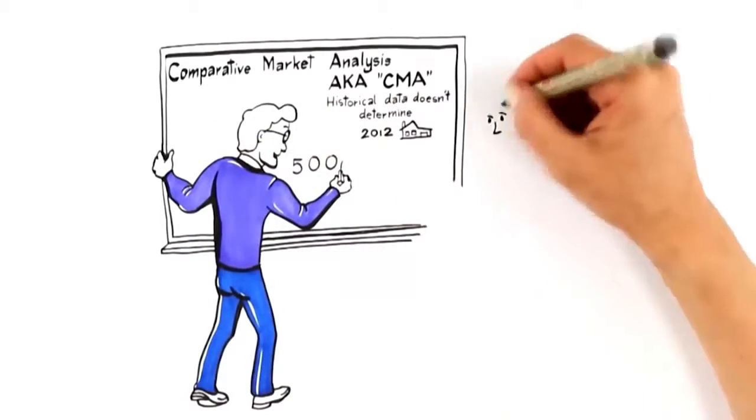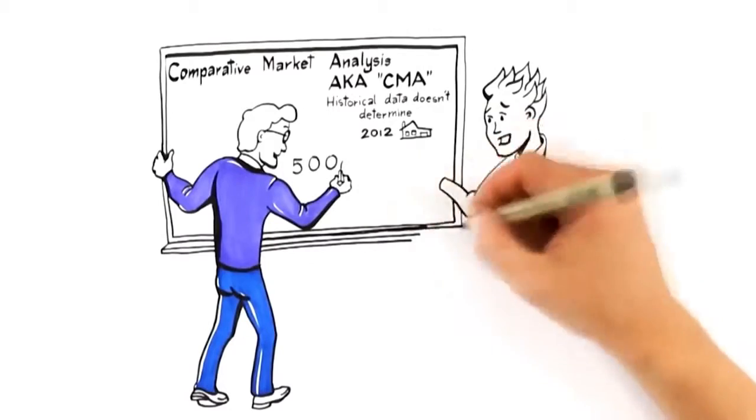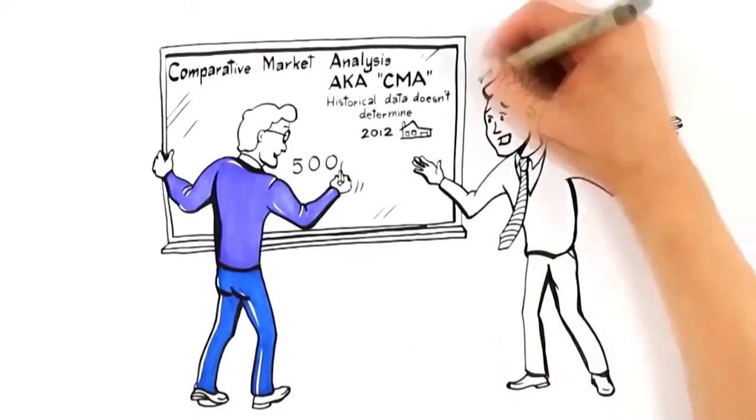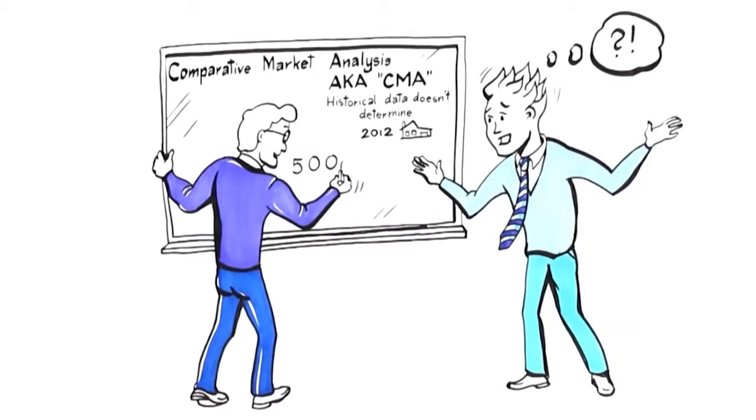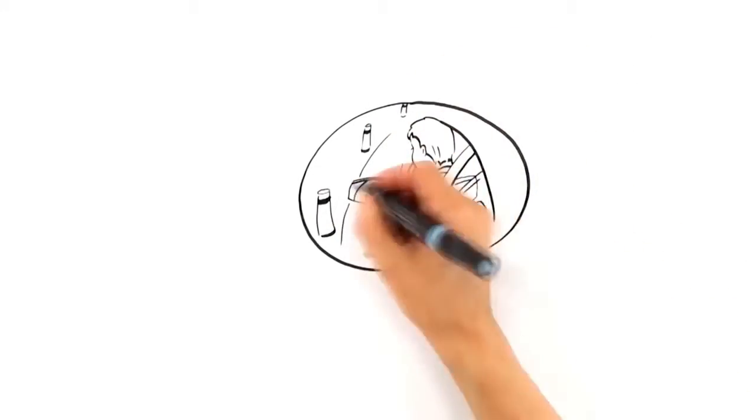What most agents don't realize is that historical data doesn't determine how you should position your home in today's market to attract the highest offer. This would be like driving your car while looking in the rearview mirror.